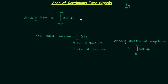So these are the two formulas to calculate the area of continuous time signals, and now we will try to understand from where we obtained these results. We will take one example to clarify this.